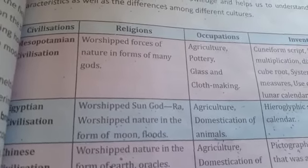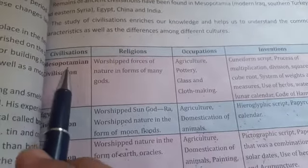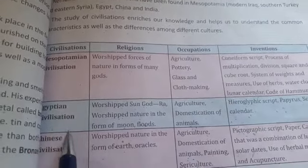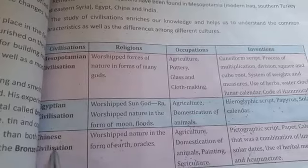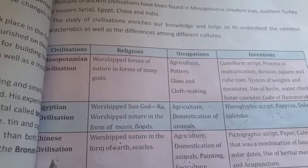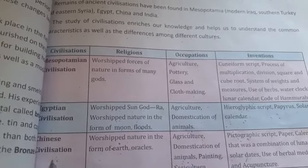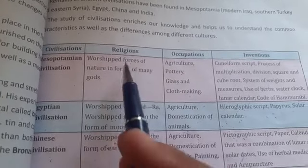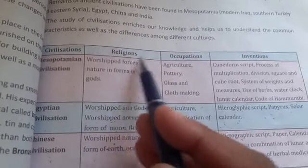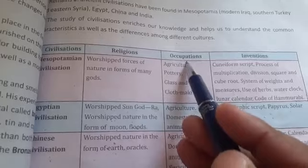Let's start. The civilizations we are comparing are: Mesopotamian civilization, Egyptian civilization, and Chinese civilization. We will compare them on the basis of religions, occupation, and inventions.